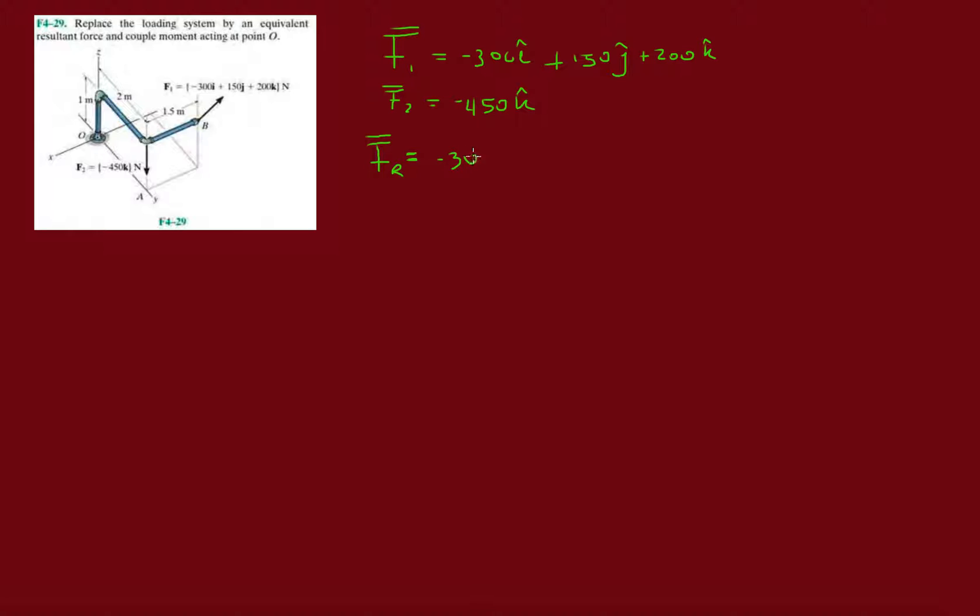So minus 300 plus 0 is minus 300i. Then 150 plus 0 is 150j. And last but not least we got 200 minus 450, so it's minus 250k.